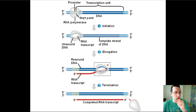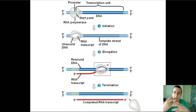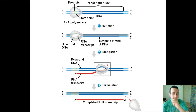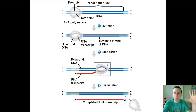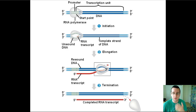Transcription happens in three stages. First, you activate a transcription unit by activating what is called a promoter sequence. Then you initiate transcription by allowing the RNA polymerase to attach itself to the DNA and unwind it. Then the RNA elongates as the RNA polymerase reads through the code. Finally, as the RNA polymerase reaches the end of the gene, it terminates, releases from the DNA, and lets out the completed RNA transcript — which in eukaryotes still needs to be processed.